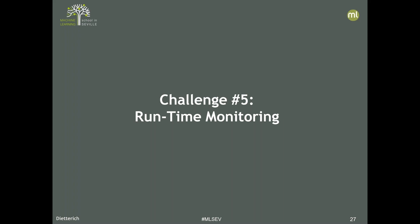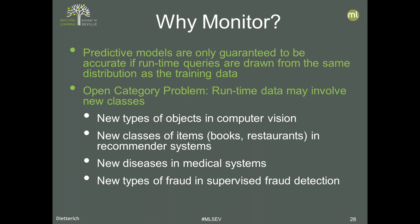The fifth challenge is runtime monitoring. Predictive models are only guaranteed to be accurate if runtime queries are drawn from the same distribution as the training data. There are many problems where data may be shifting at test time. One problem is the open category problem: at runtime, data may belong to new classes not available at training time — new types of objects in computer vision, new classes of items in a recommender system, new diseases in a medical system, or new types of fraud in a fraud detection system. We need to monitor runtime to see if strange things are happening that might signal these new objects.